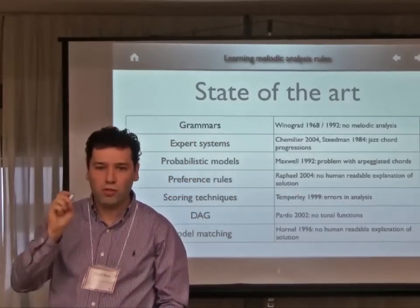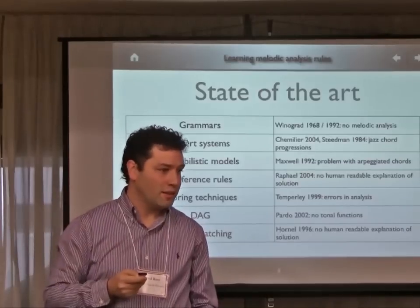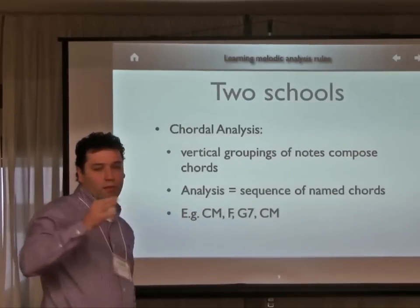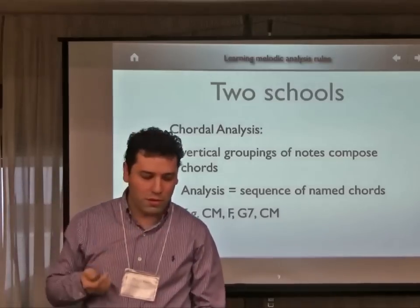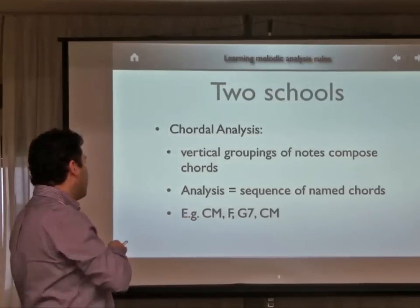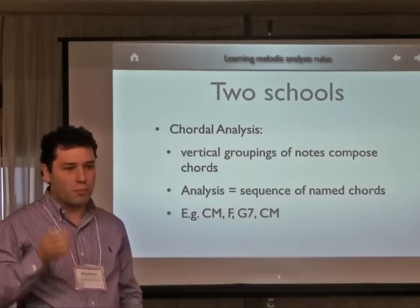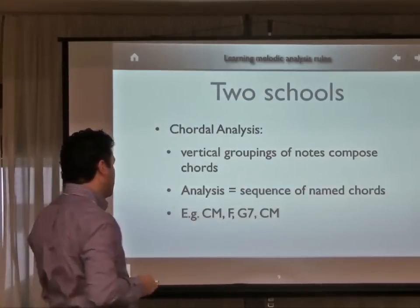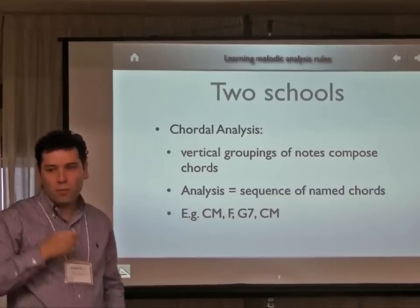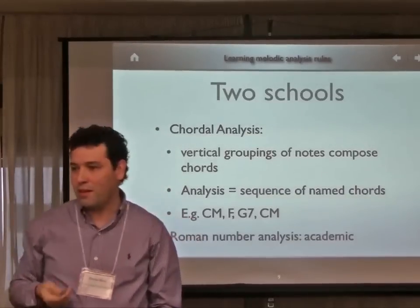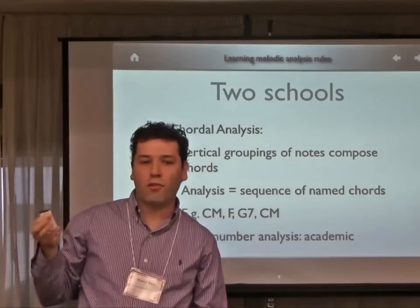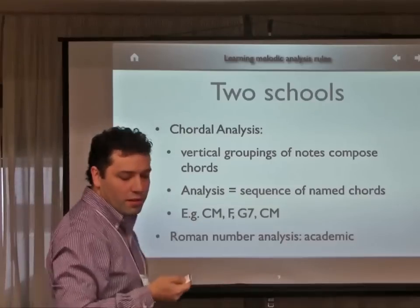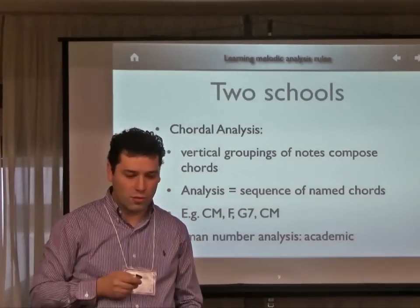There are some important works dealing with tonal analysis, but none of them focus specifically on melodic analysis. There are two ways of analyzing songs from the tonal analysis point of view. One is the classical vertical grouping of notes that compose named chords, giving these kinds of sequences. The other, a more classical academic approach, is to use Roman numeral analysis with tonal functions.